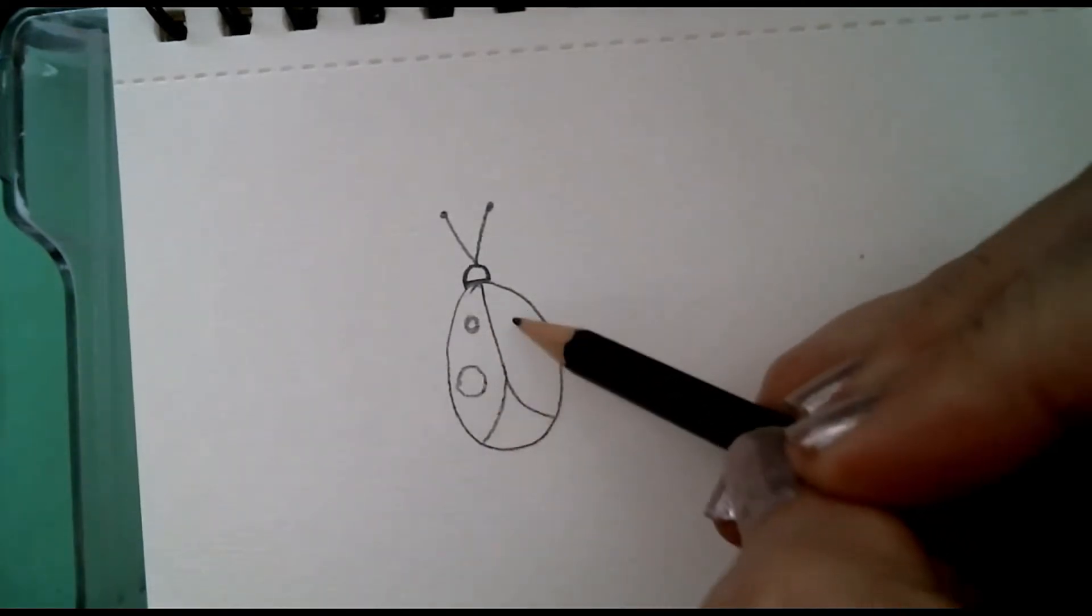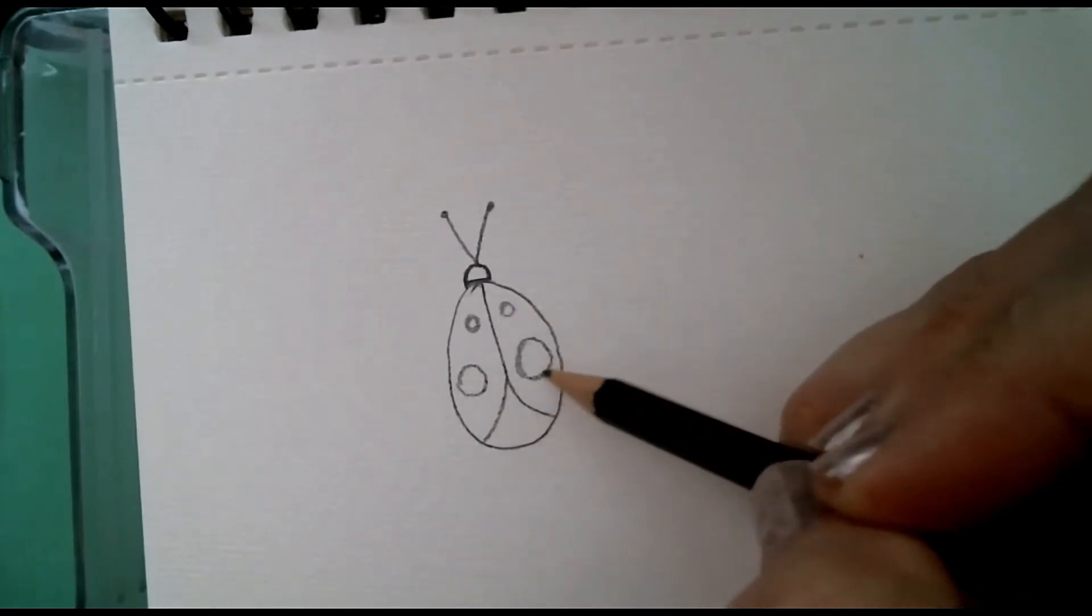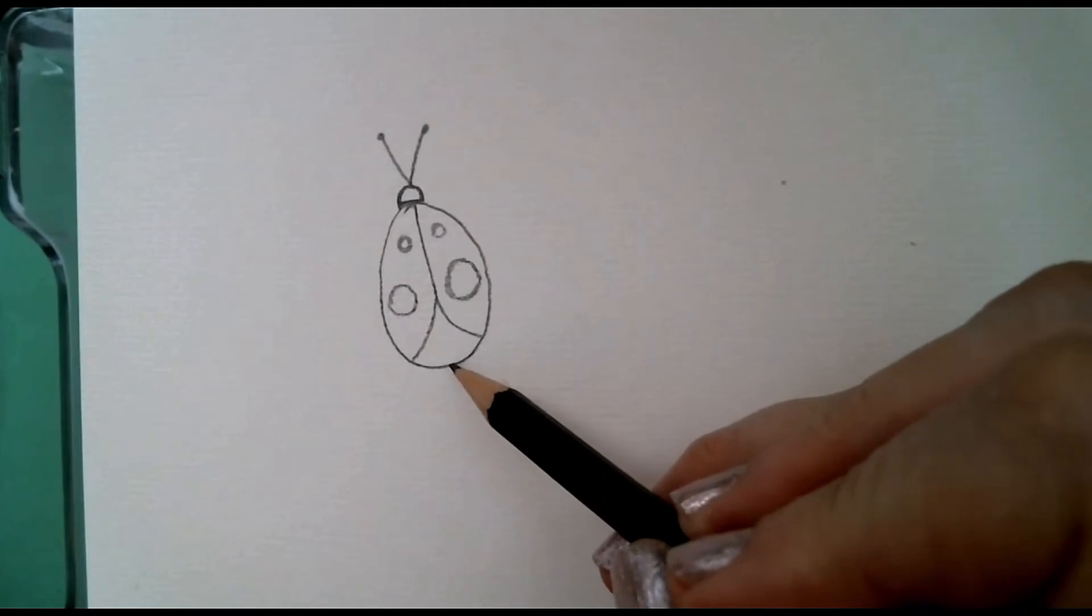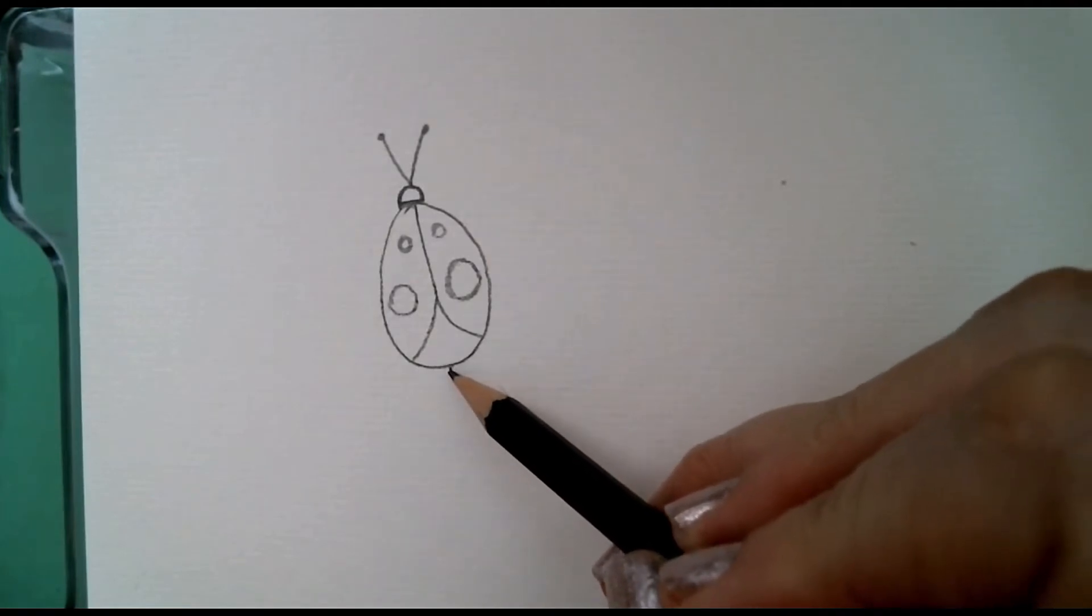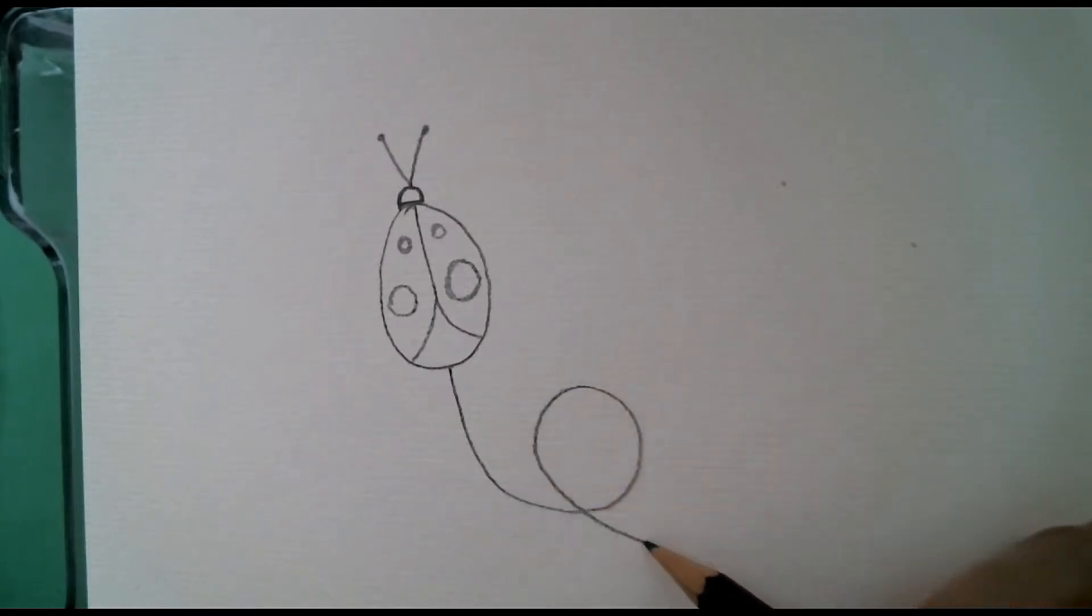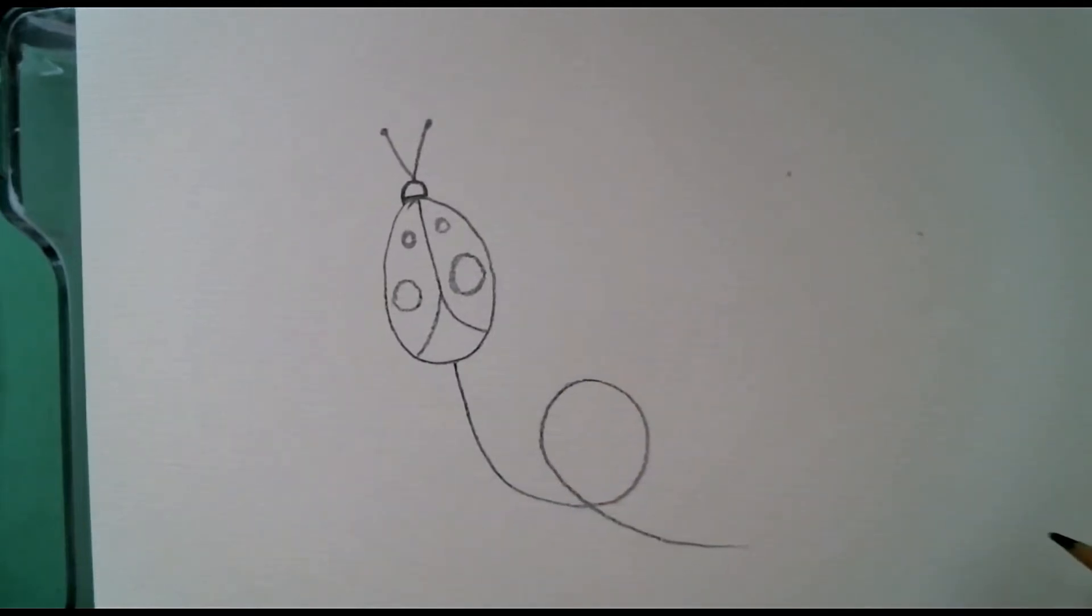And I'm going to give him some spots. There may be little ones and big ones, however you want to put his spots on. And then in the back I'm going to do a trail. So I'm going to do a line down and then curve it around and make just a big loop going any direction you want.